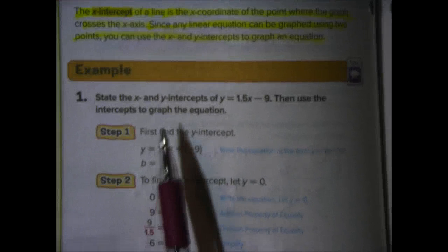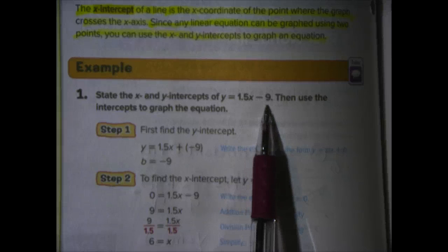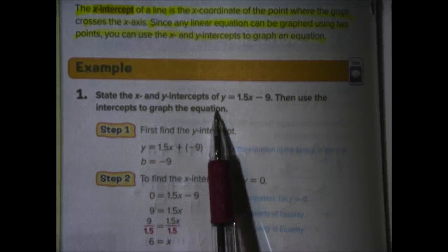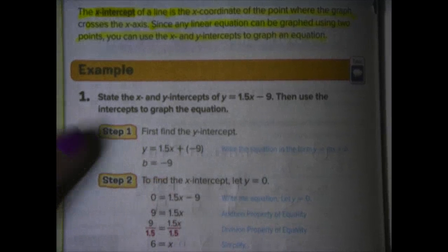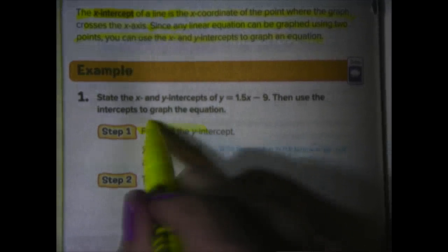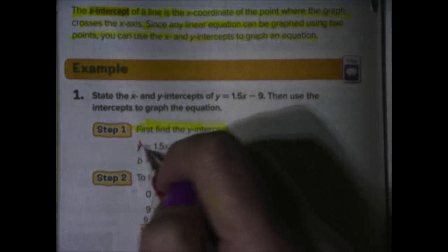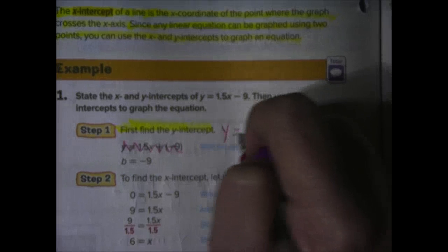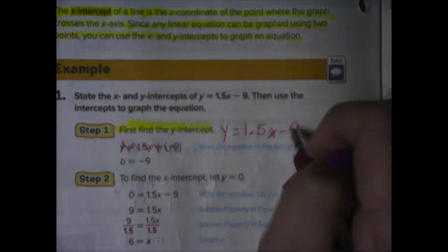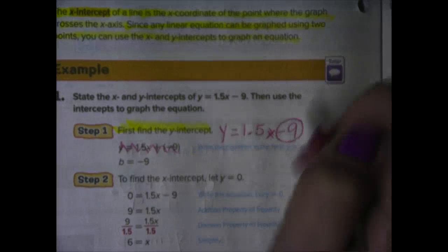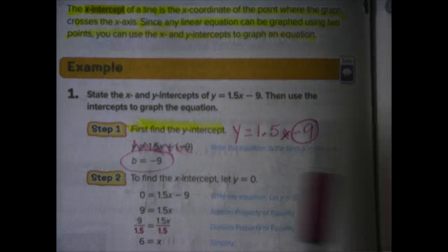So, example one says state the X and Y-intercepts of Y equals 1.5X minus 9, then use the intercepts to graph the equation. So, step one. First, find the Y-intercept. Well, that's the easy part because it said, and remember, we don't like it like this. It said that it was Y equals 1.5X minus 9. And we know that the Y-intercept is negative 9. We don't have to rewrite it to know that. We know that it's negative 9.